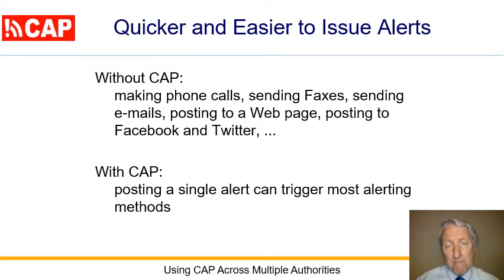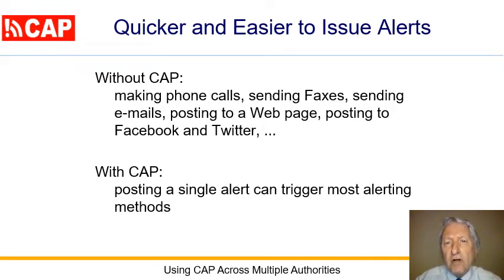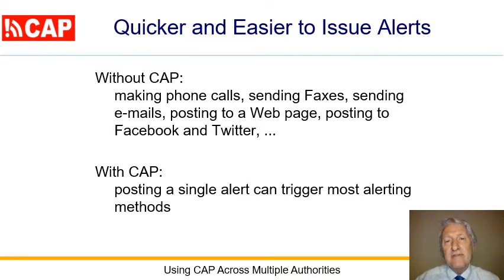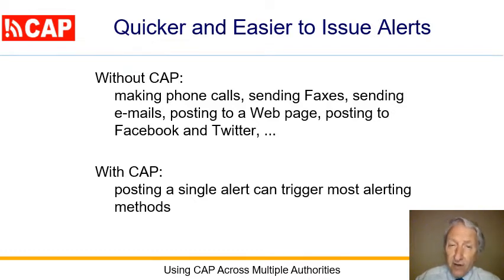With CAP, a single alert disseminates quickly over multiple alerting methods. From the receiver perspective, CAP is the fastest way to get alerts from the alerting authority, and CAP is also less error-prone.